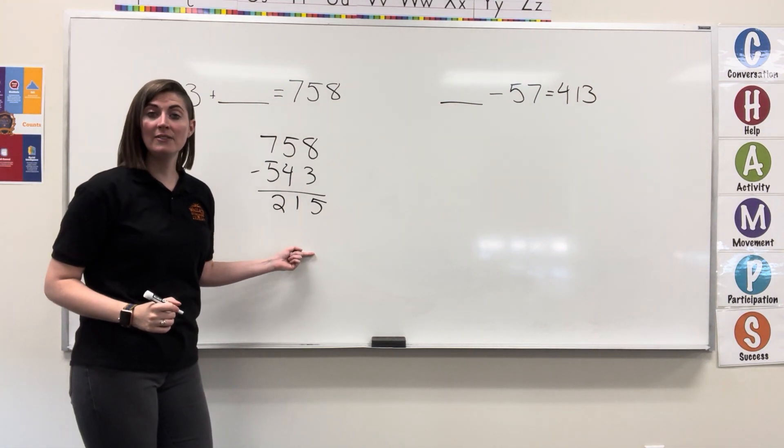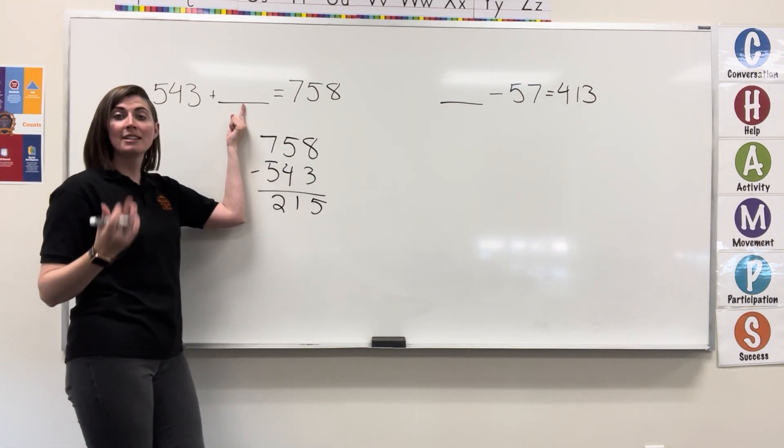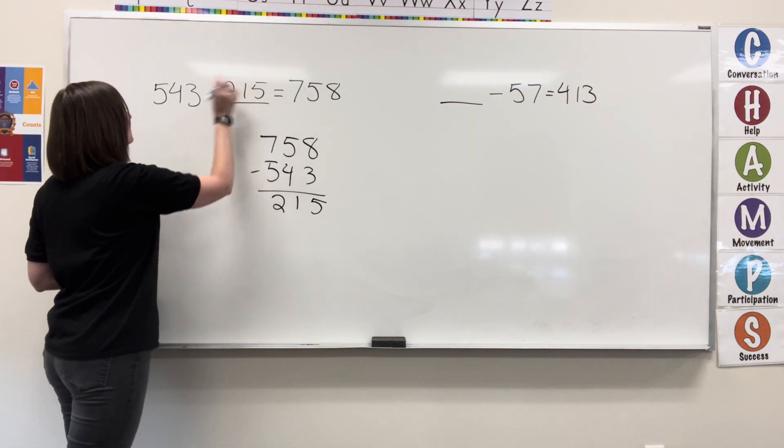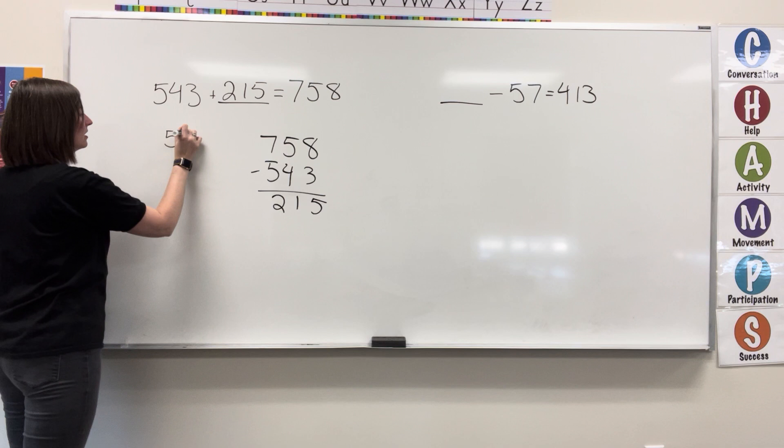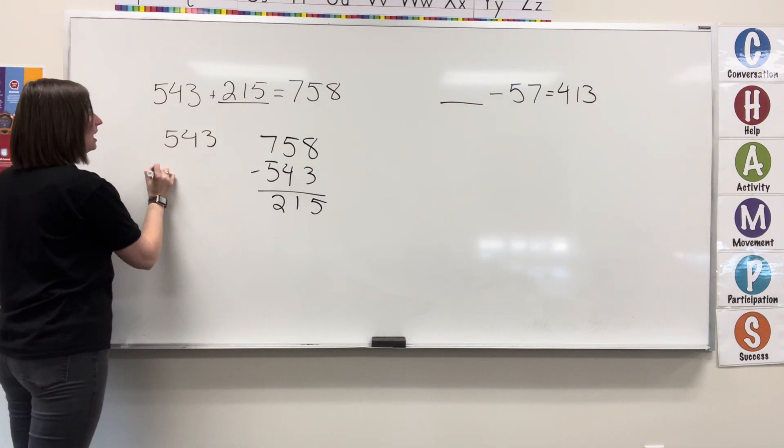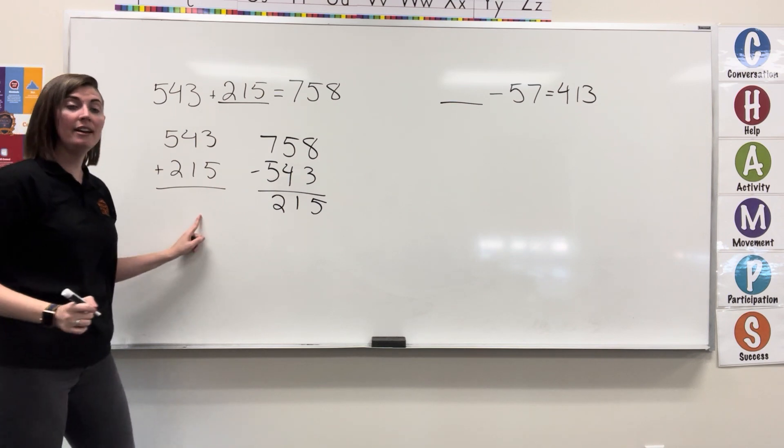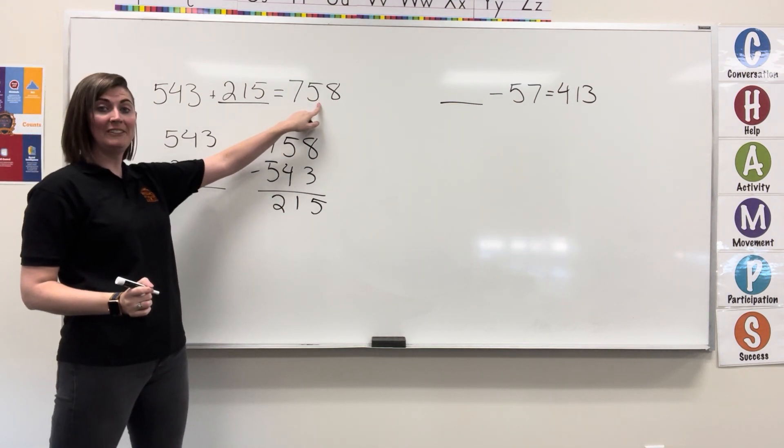Now we can plug in this value to the original equation to see if we did it correctly. So if I said 543 plus 215, I should end up with 758.